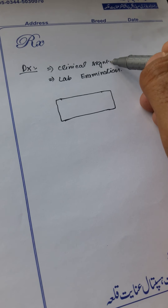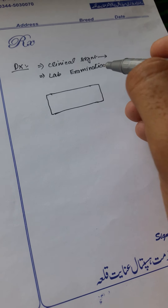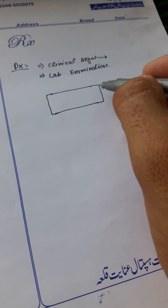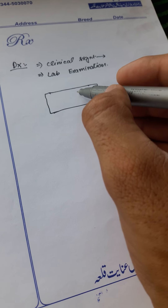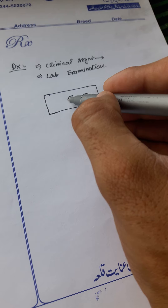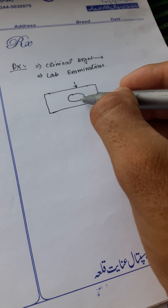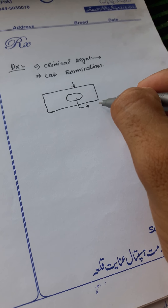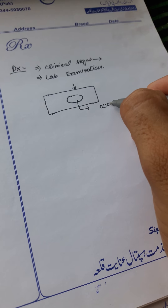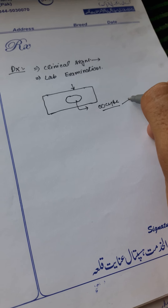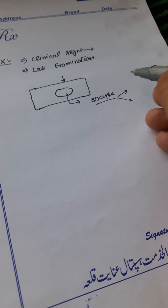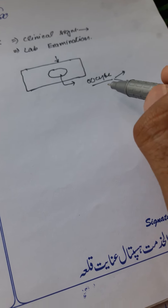Diagnosis is based on the clinical signs and laboratory examination. In the lab, we take fecal material of the animal, put it on a slide, and examine it under the microscope. Under the microscope we examine the oocysts — both unsporulated and sporulated oocysts — and note the difference between Isospora and Eimeria oocysts as described earlier.